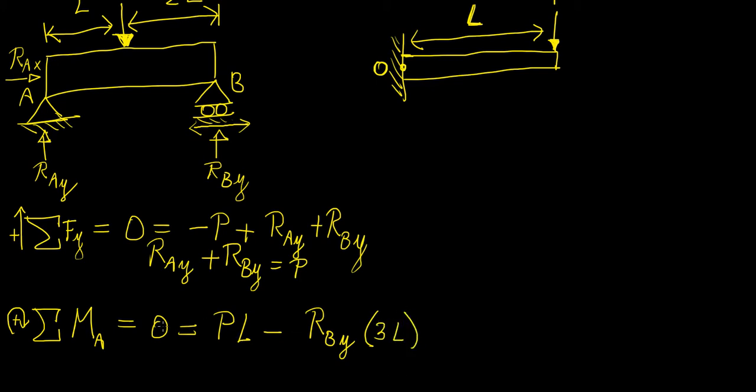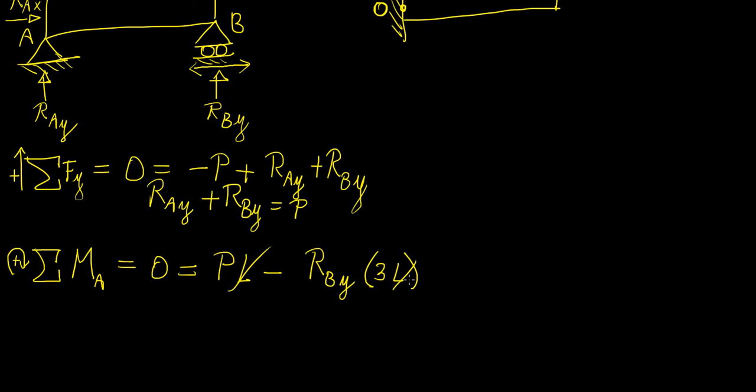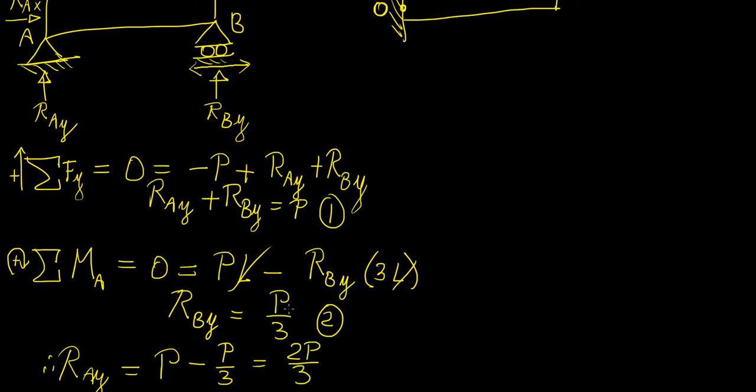We can cancel out the length, so it turns out that RBy equals P/3. Now we have two equations, two unknowns. We already know what this one is, so we can plug that in to solve for RAy. RAy equals P minus P/3, which equals 2P/3. That's basically our answer. Normally this is the first step in analyzing any problem in solid mechanics: we need to solve for the reaction forces.